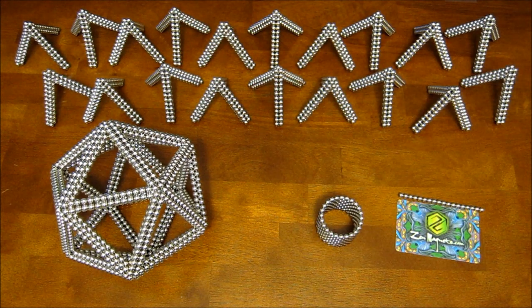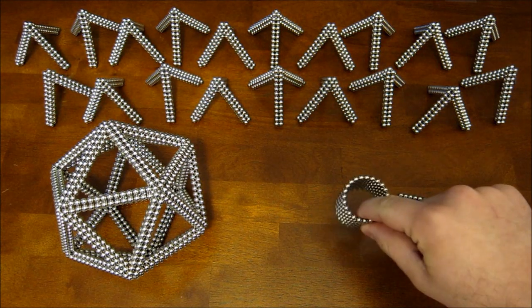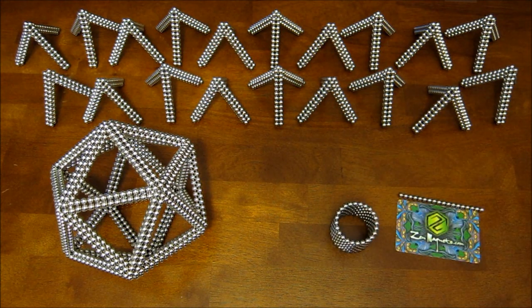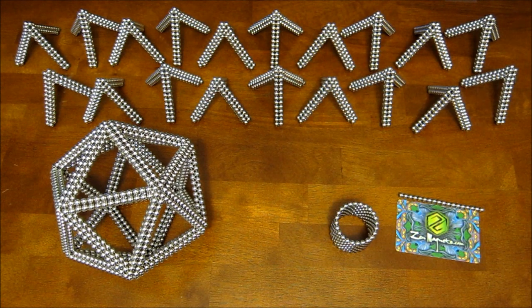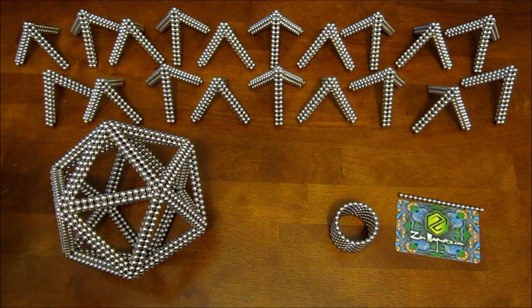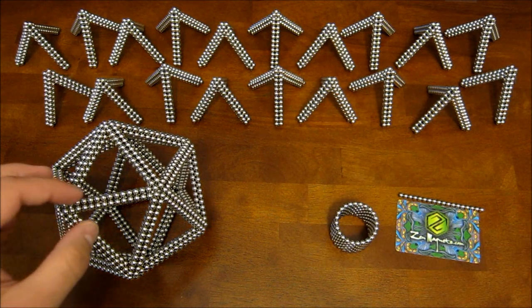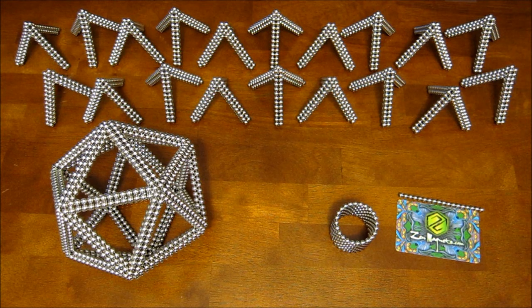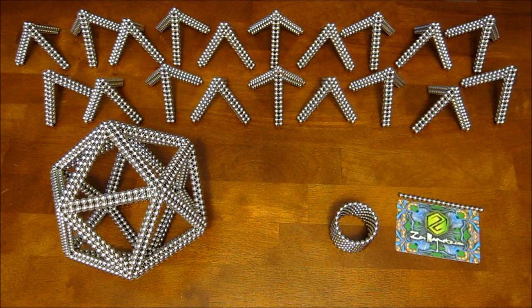So you want to start out with the same kind of thing, a ring of magnets. Except you want this to be two shorter than whatever you used to make the icosahedron. So in this case we use rings of 26 for the icosahedron, so we're going to use rings of 24 for the points.